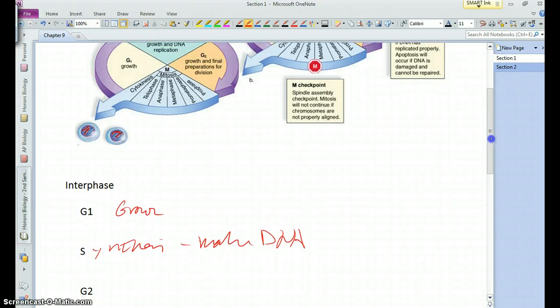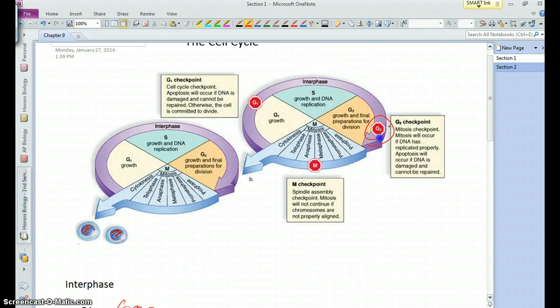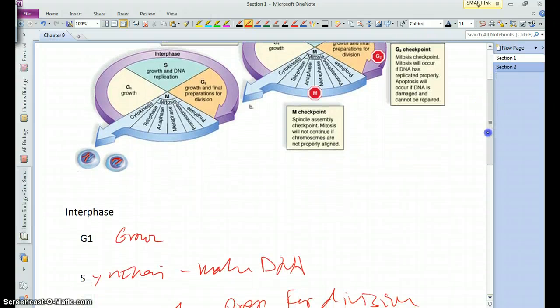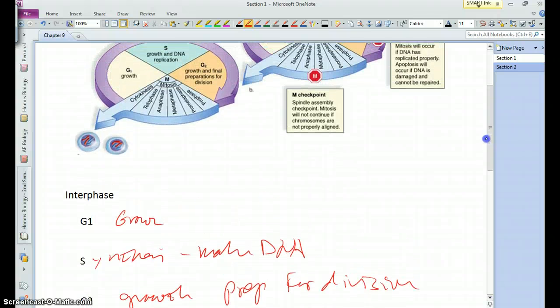Then we get into the G2 phase, which is more growth. Basically we're prepping for division. In particular, there's a key checkpoint here in G2 in which the cell is checking to make sure that the DNA has been duplicated correctly and that it has grown correctly before it gets ready to divide.